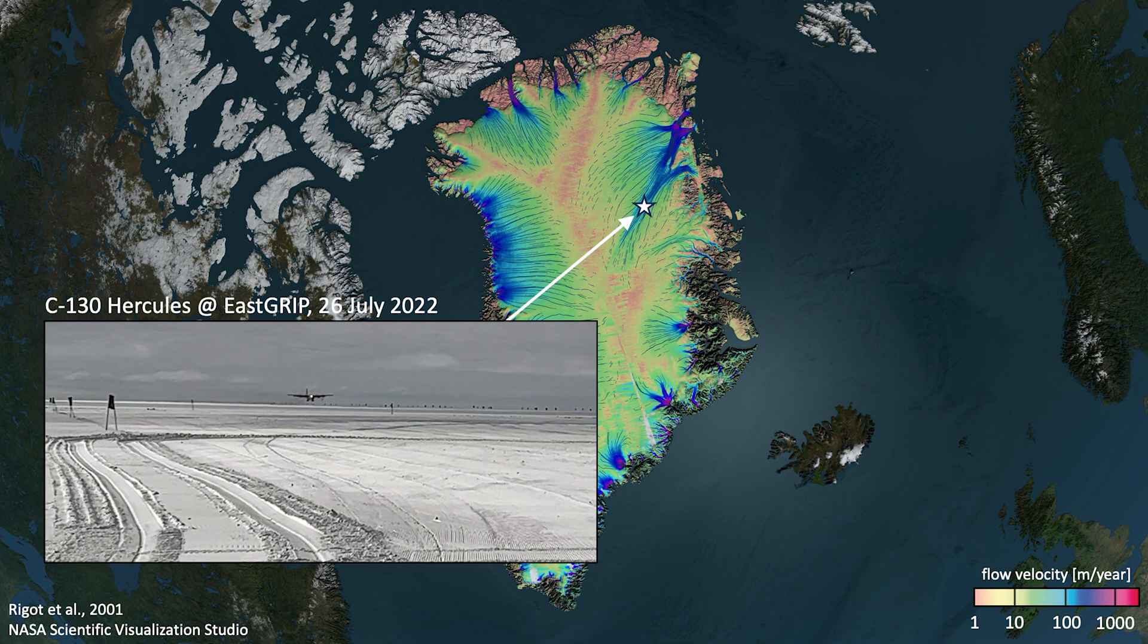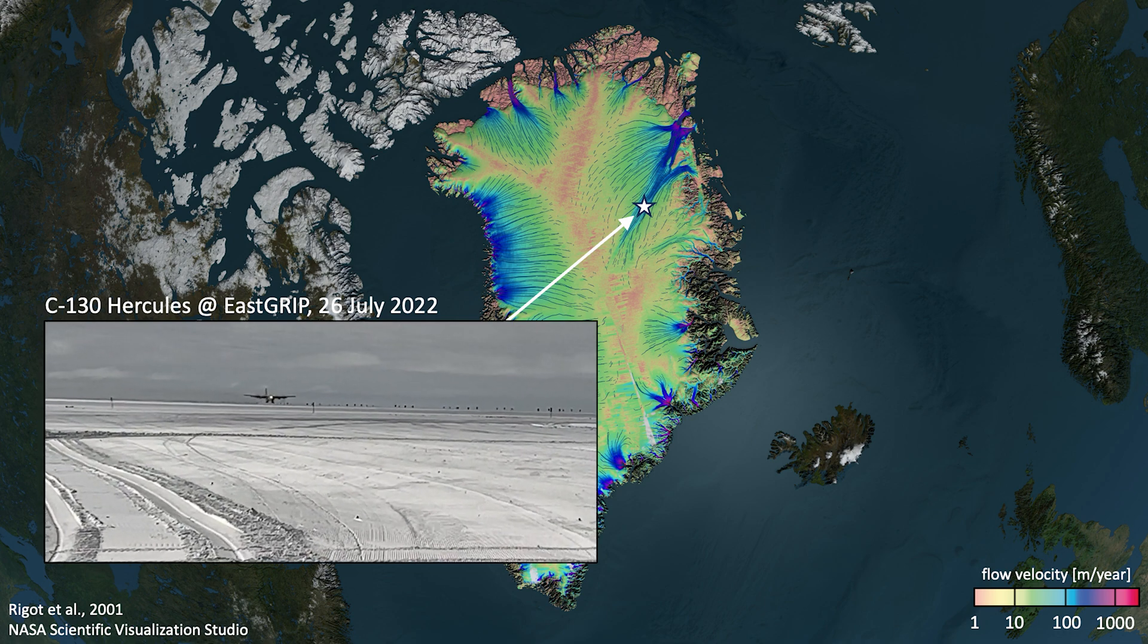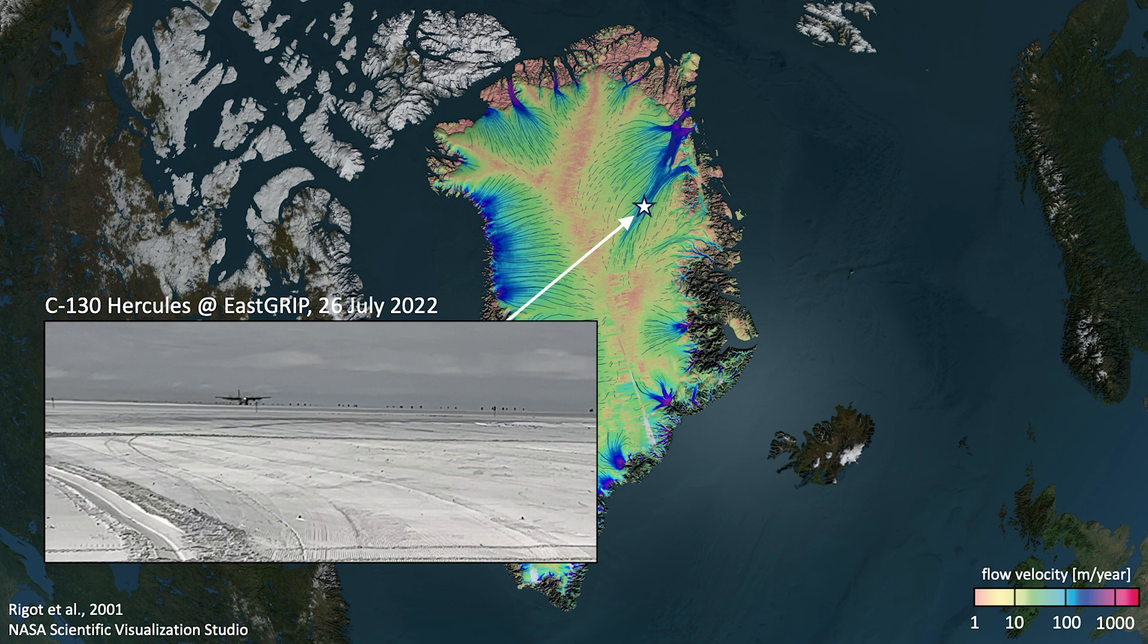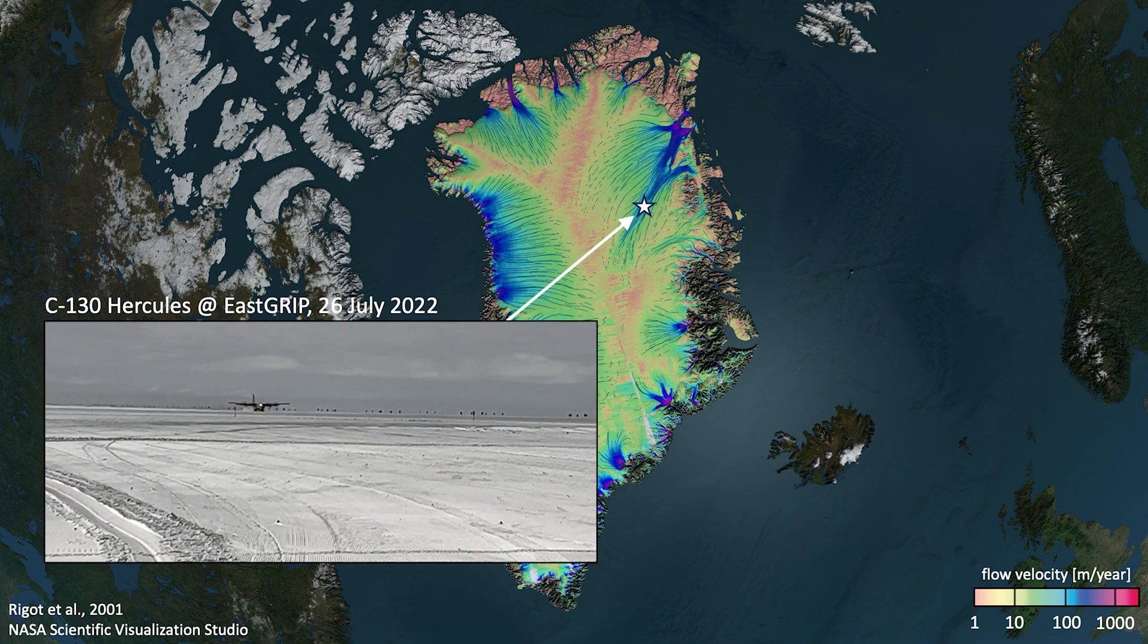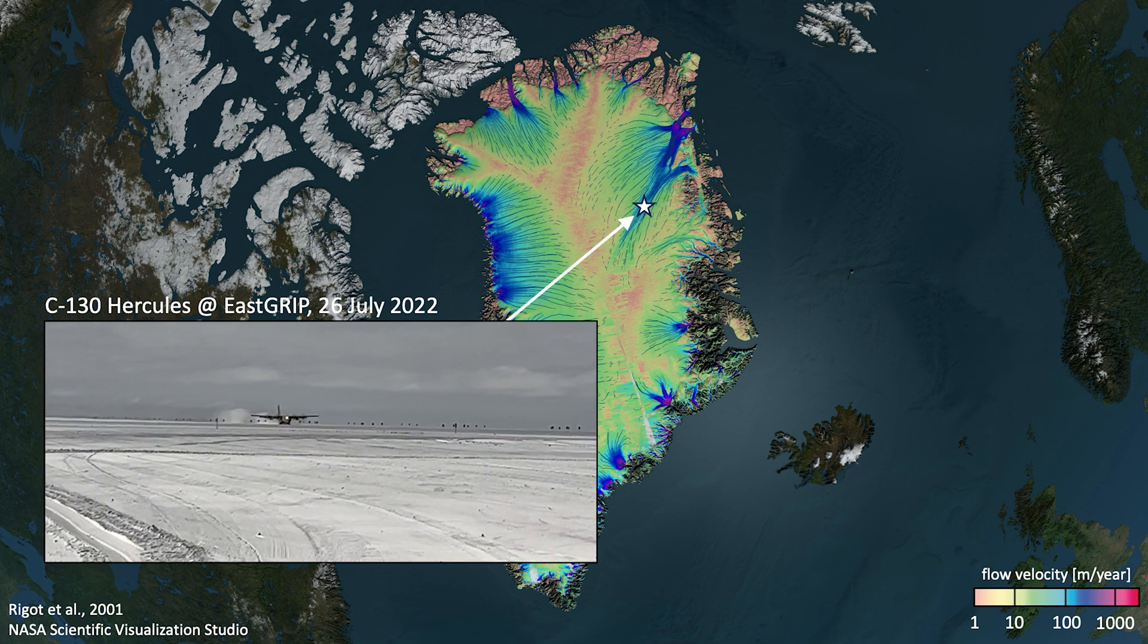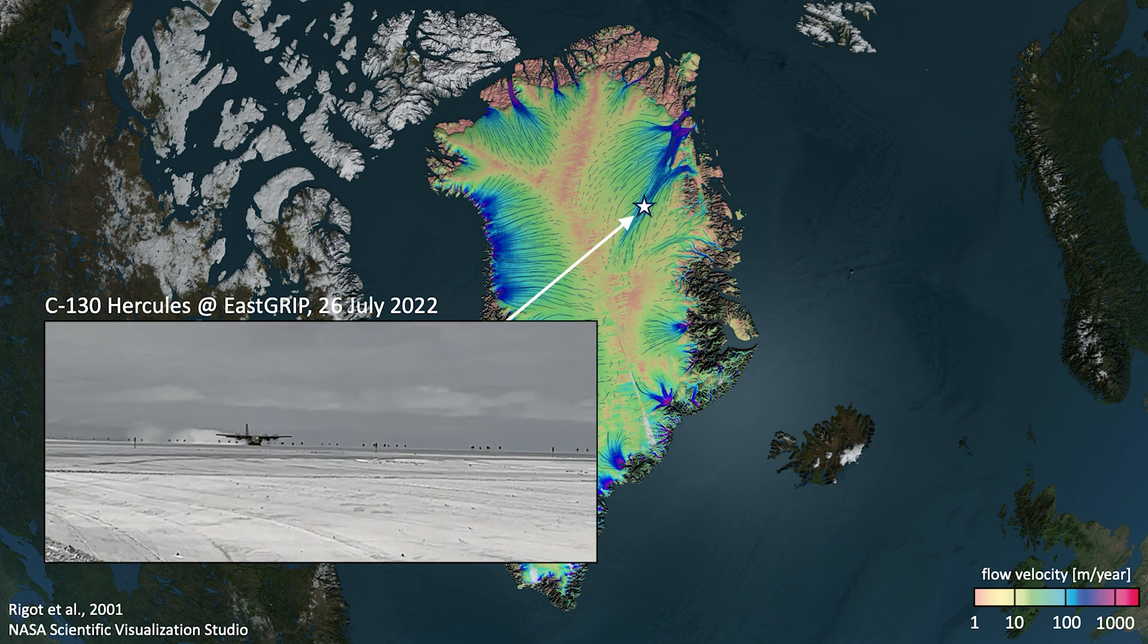The largest and most unexpected seismic source was the landing of a Hercules airplane near the campsite. Its touchdown injected an amount of energy into the ice sheet that corresponds roughly to an earthquake of magnitude zero.